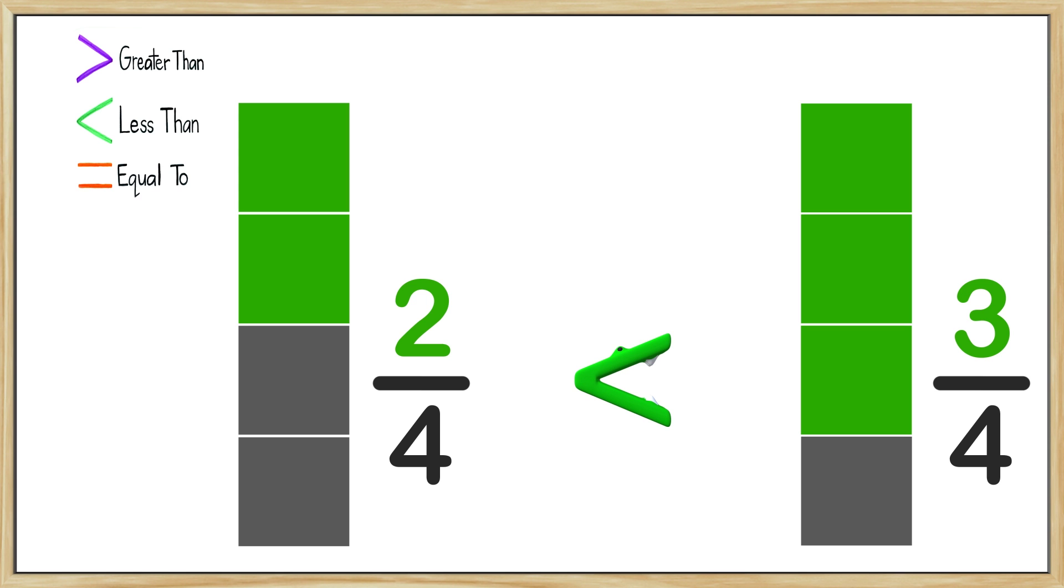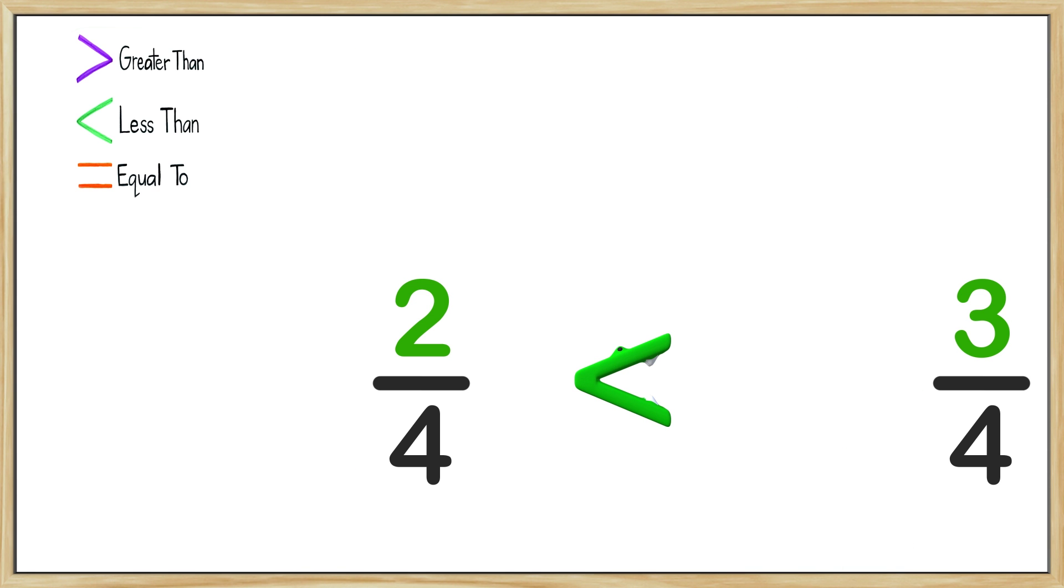The fraction on the right, 3/4, is bigger than 2/4. The space gator's mouth always opens to the bigger number, so it wants to eat the 3/4. So we can say that 2/4 is less than 3/4. Great job!